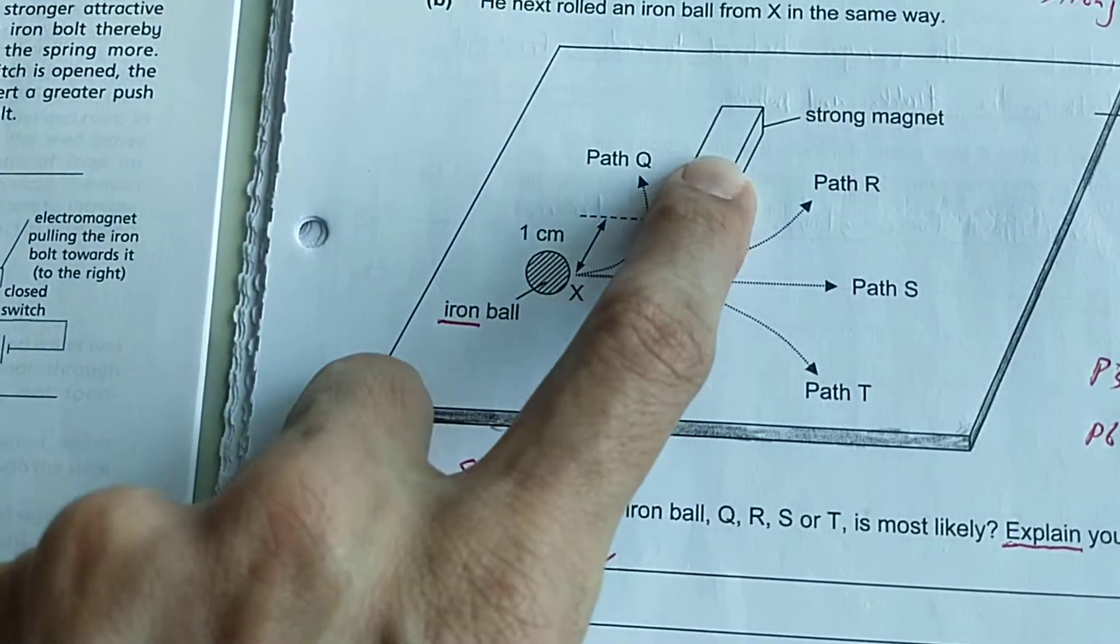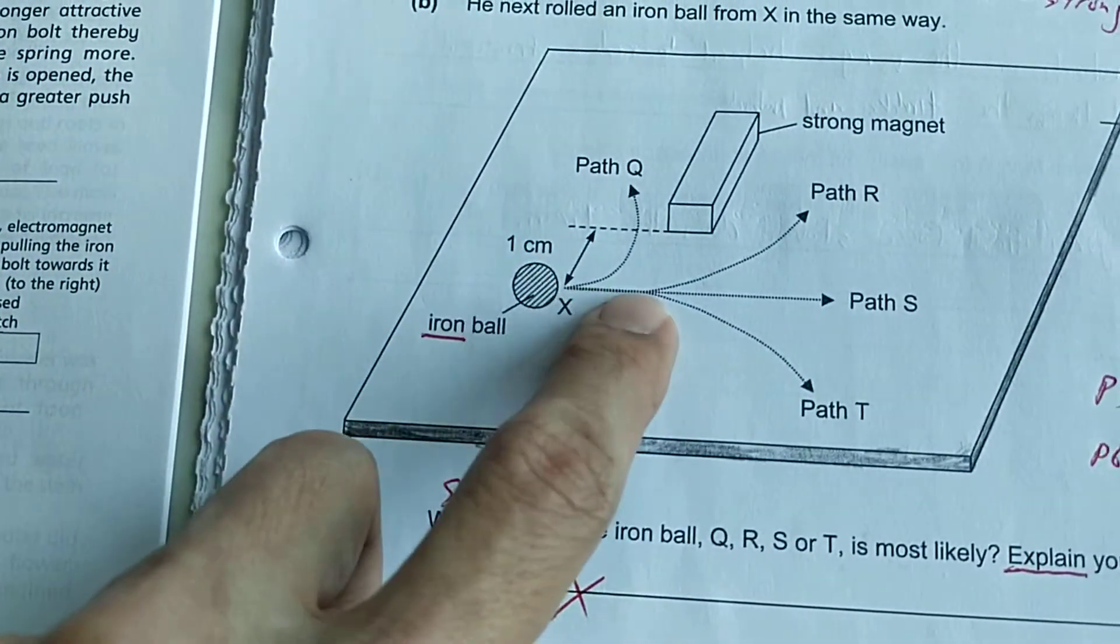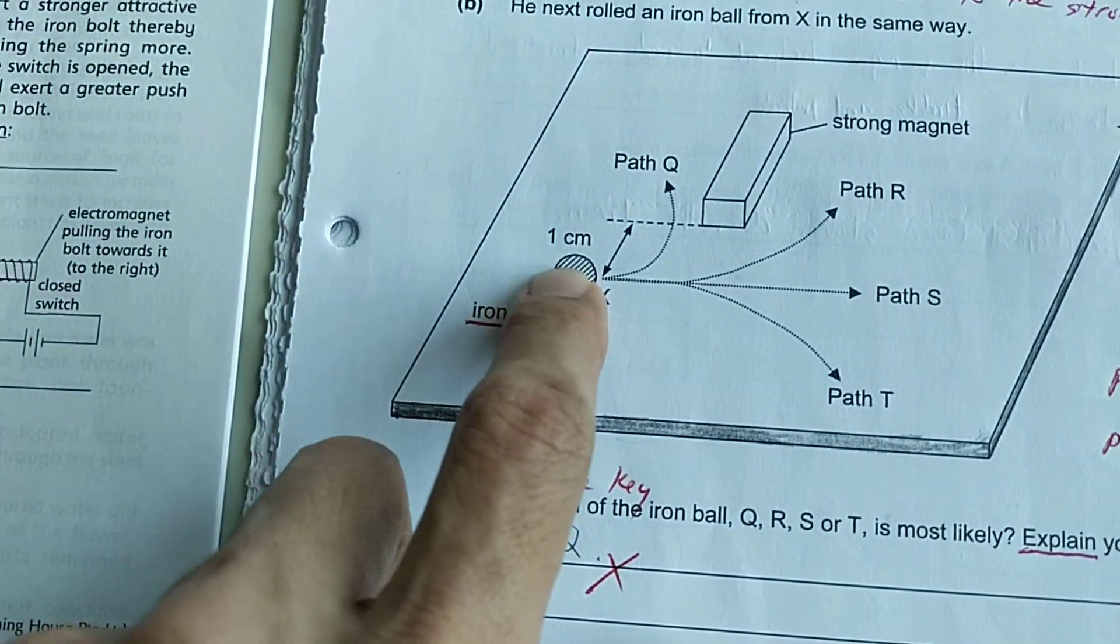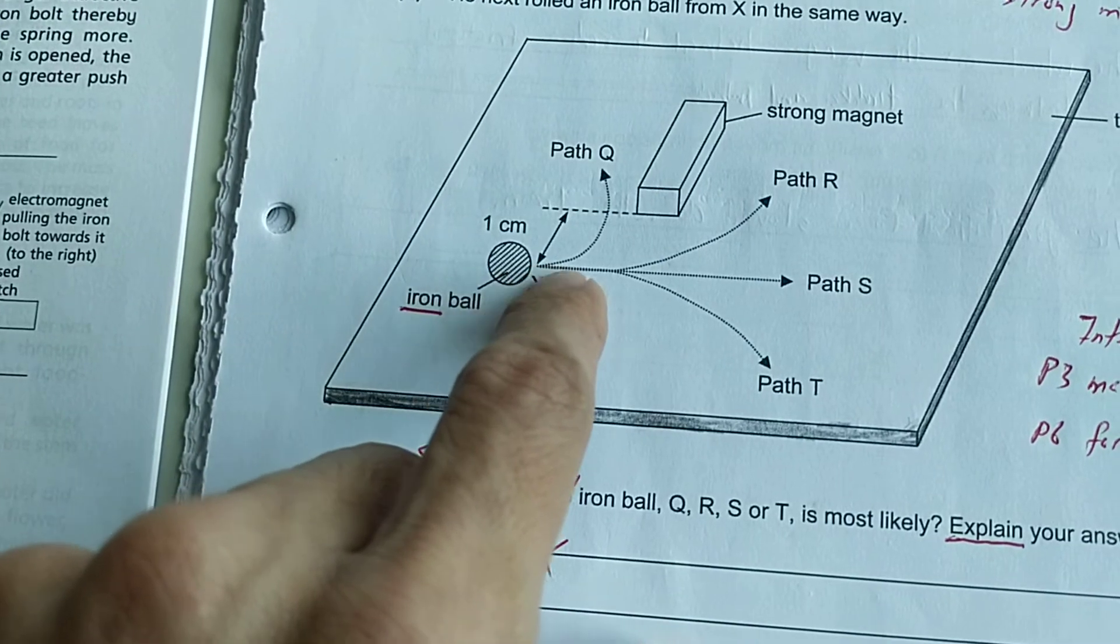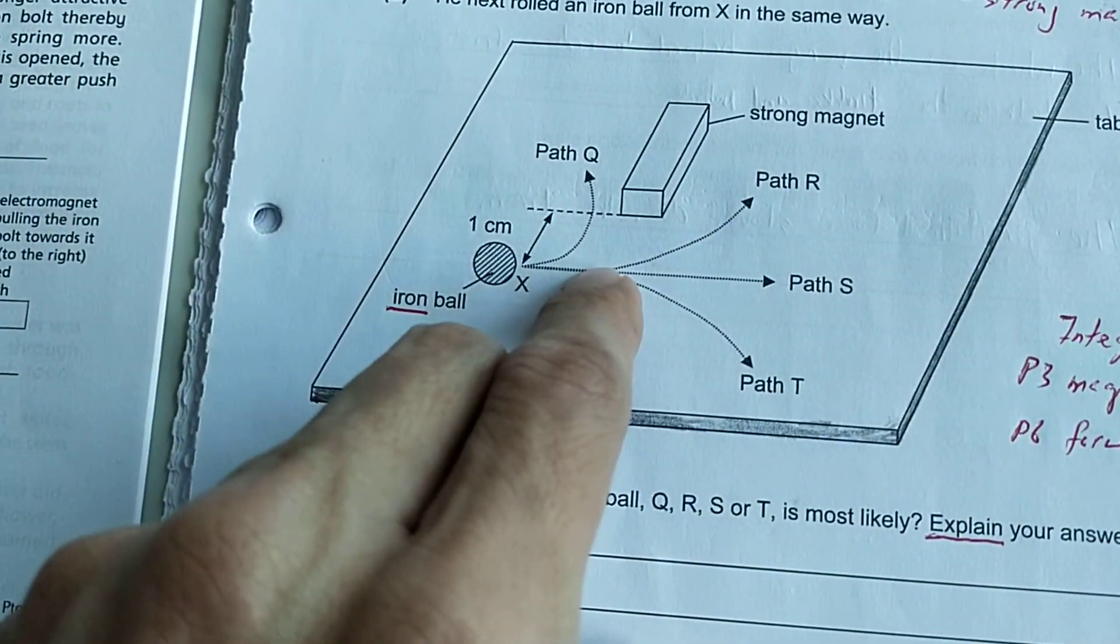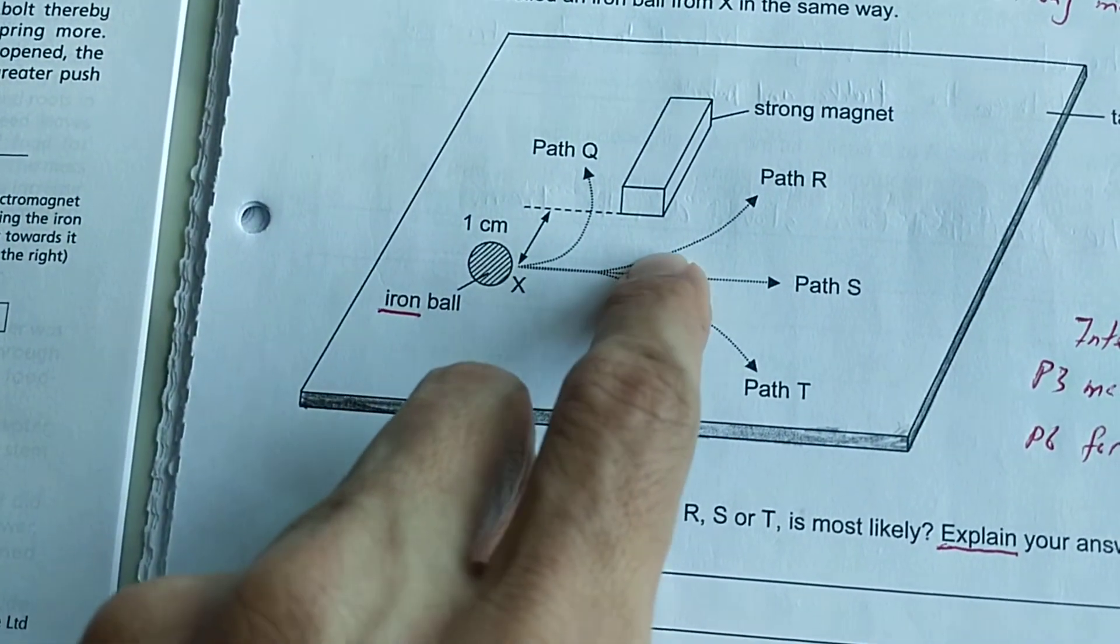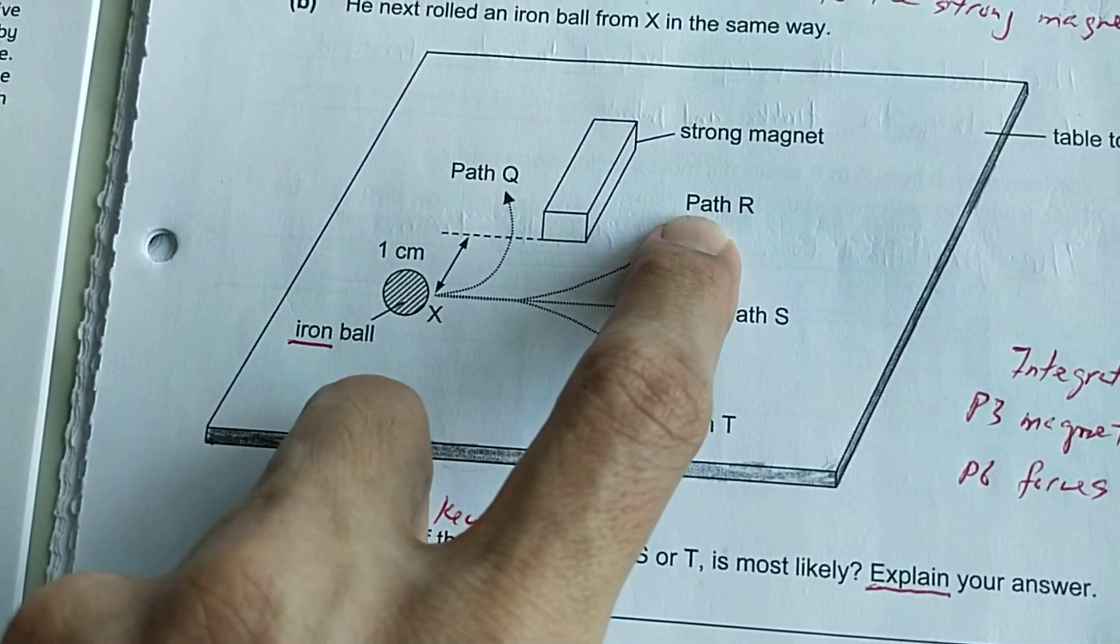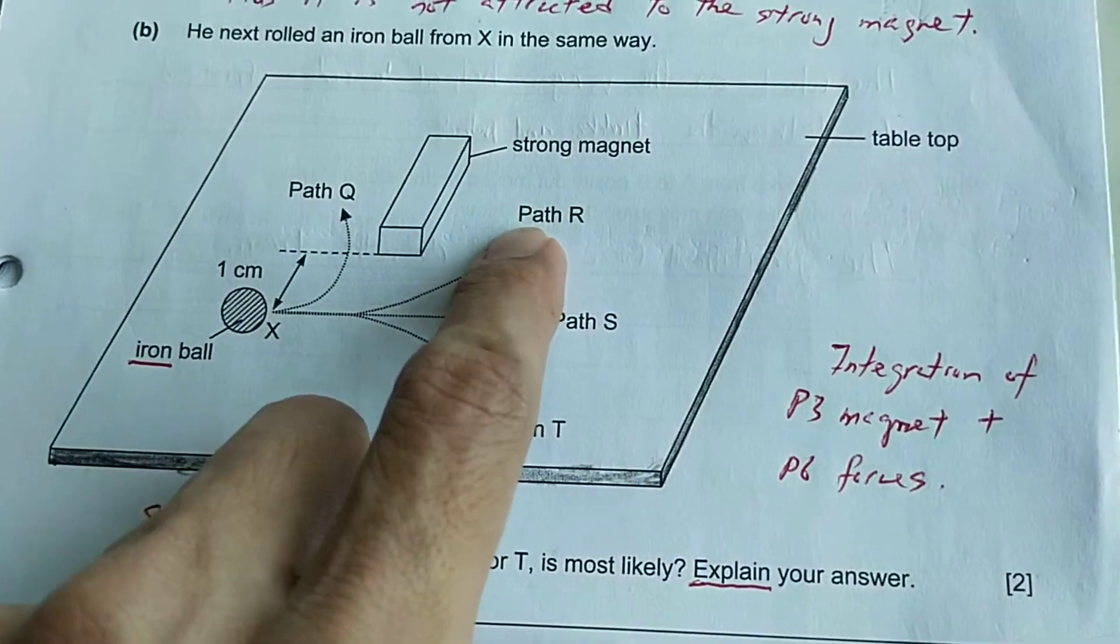It can't be Q because Q is too near to the magnet. When you apply the force, the iron ball will continue to move. As it comes near to the strong magnet, the magnetic force will attract the iron ball and it will deviate from its normal path. So the correct answer should be path R.